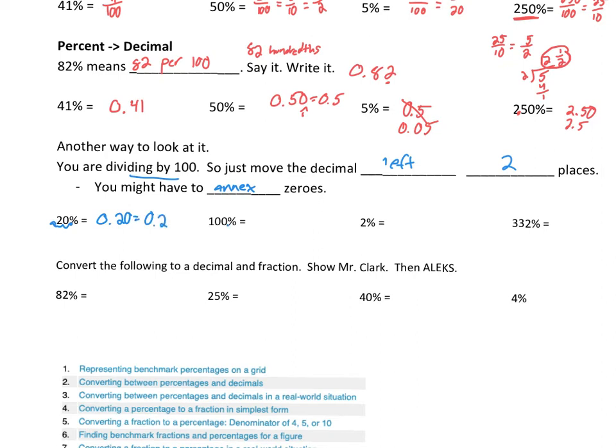100% the decimal is there. We move it to the left two spots. 1.00 or just one. 2% the decimal was there. We can't move it over two places. We have to annex some zeros. We can annex as many zeros as we want out front. Move it over two places. It gives us two hundredths. Three hundred and thirty-two percent. Move it over two. Three. Thirty-two hundredths.